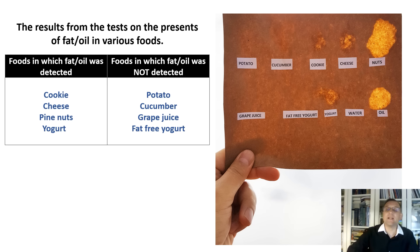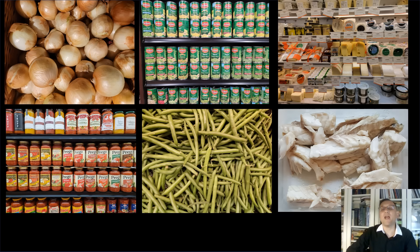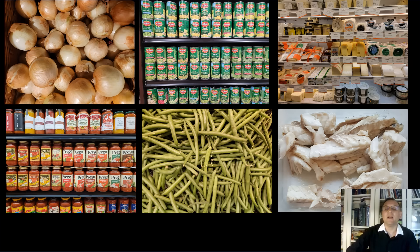We can see this by comparing the translucent spots with the positive and negative controls. Now, you can test any materials for the presence of oils and fats by simply using a piece of paper. Just crush the tested material on the paper, let it dry for a while, hold the paper to the light, and look.